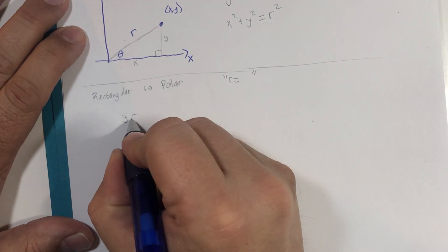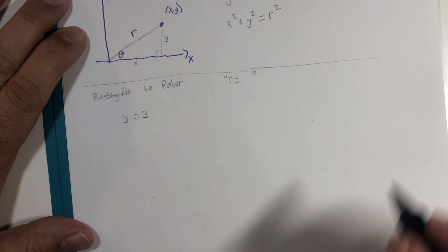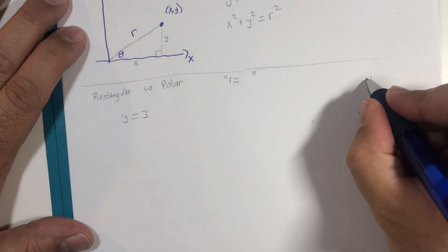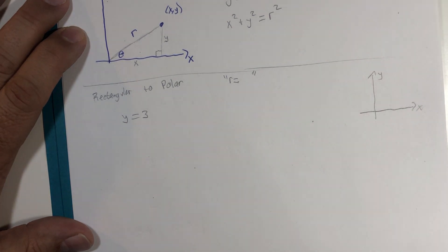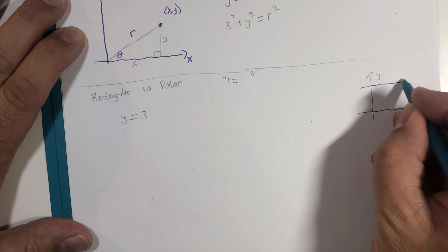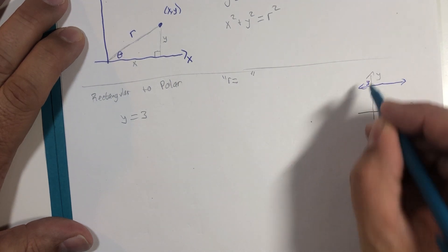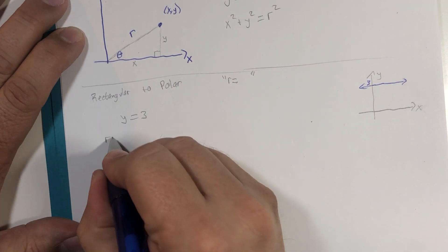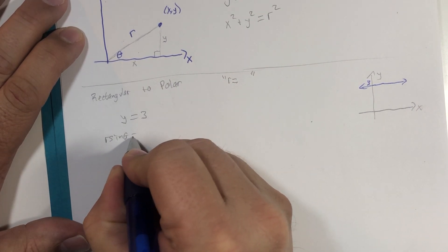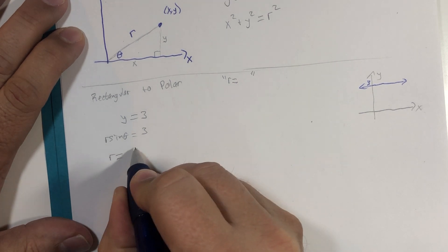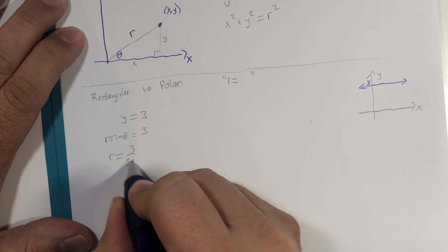First example, y equals 3. So y equals 3 would be a horizontal line, 3 units up. Replace y with r multiplied by sine of theta, and then divide by sine of theta, and we get r equals 3 divided by sine of theta.